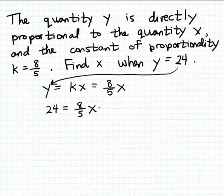So one way of isolating x in this equation is to multiply both sides of this equation by the reciprocal of this constant of proportionality 8/5. And so that reciprocal of 8/5 is 5/8. Of course, we have to multiply that on both sides of the equation.